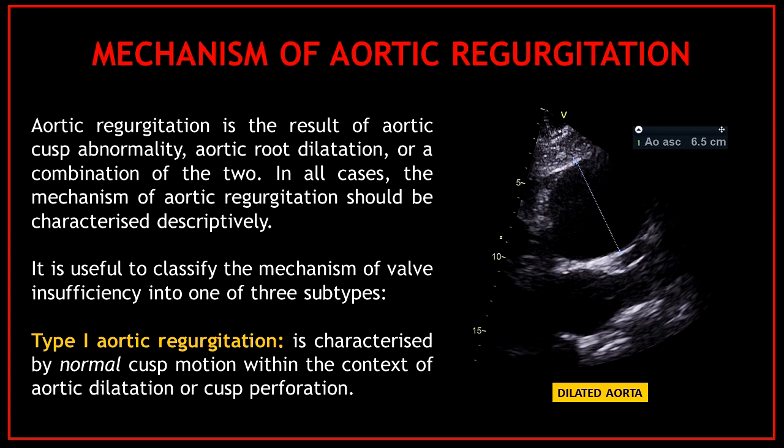One of the most important things is to assess the mechanism of aortic regurgitation. Aortic regurgitation is the result of aortic cusp abnormality, aortic root dilatation, or a combination of the two. In all cases the mechanism should be characterized descriptively. It is useful to classify the mechanism into one of three subtypes. First, we have type 1 aortic regurgitation, which is characterized by normal cusp motion within the context of aortic dilatation or cusp perforation.